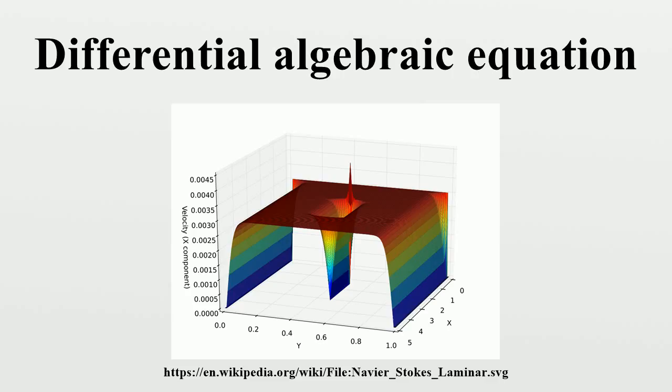Every solution of the second half g of the equation defines a unique direction for x via the first half f of the equations, while the direction for y is arbitrary. But not every point is a solution of g.